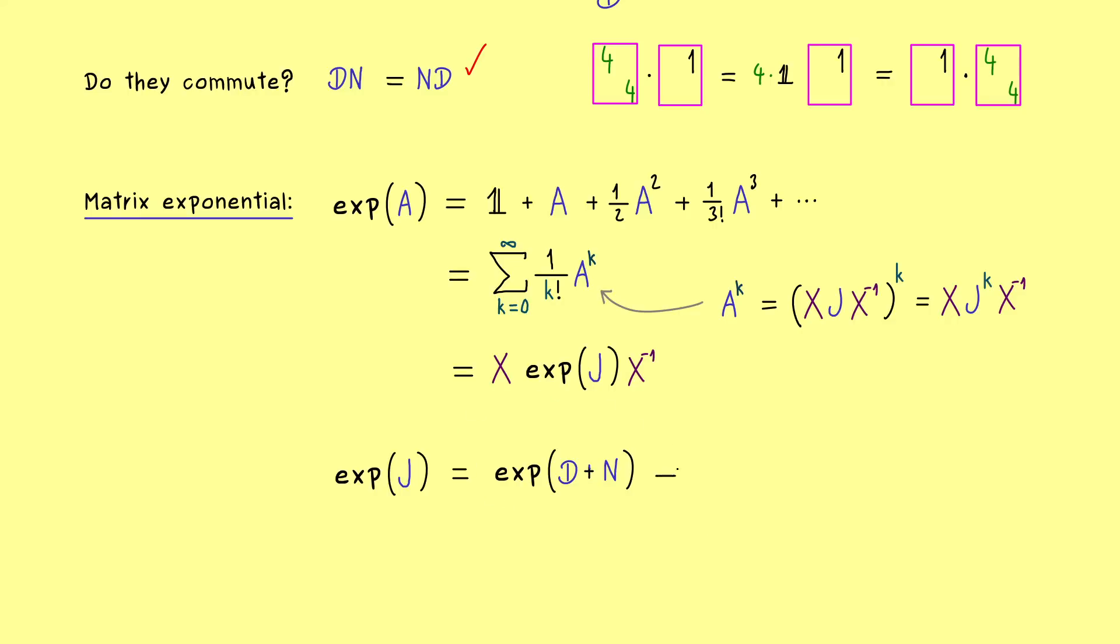However, please be careful, in general this is not correct, it's only correct for commuting matrices. Hence our result here is, that we have the product of two matrix exponentials. And now you see, the only problem while calculating a matrix exponential is that you need to know all the powers of the matrix A.